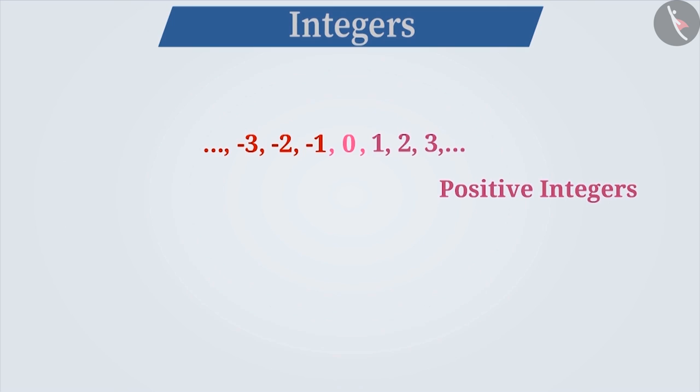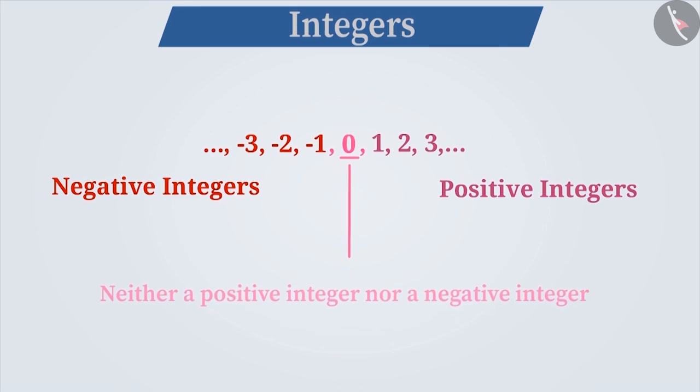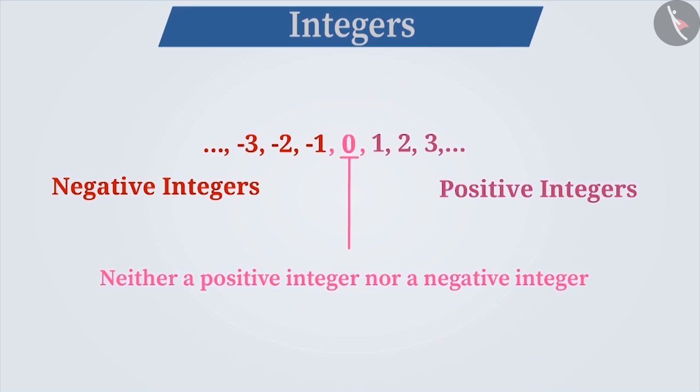Similarly, integers expressed with minus sign like minus 1, minus 2, minus 3, etc. are called negative integers. 0 is neither a positive integer nor a negative integer. Hence, it has no sign attached to it.